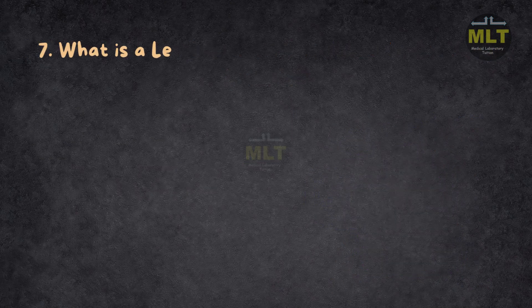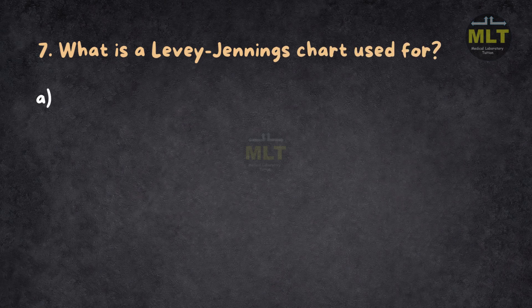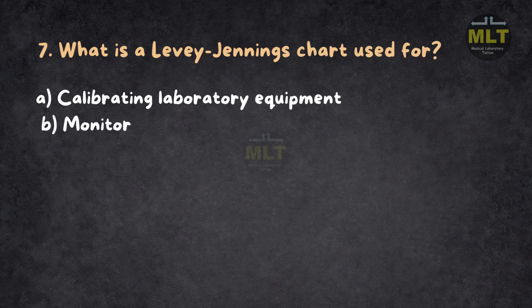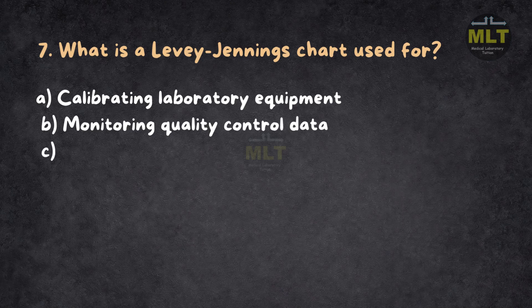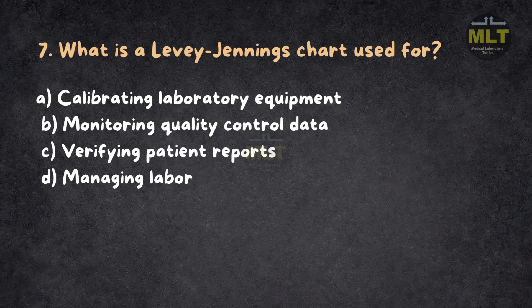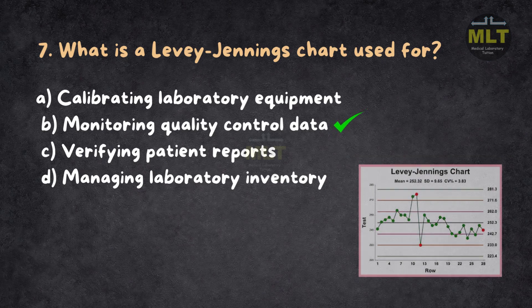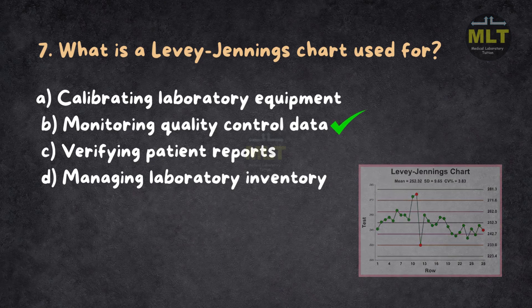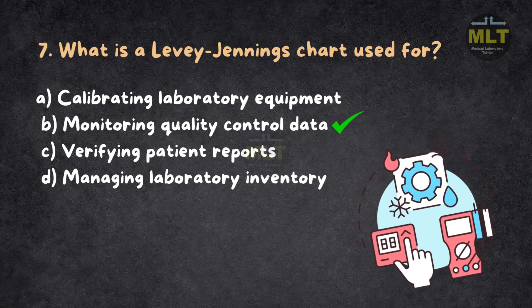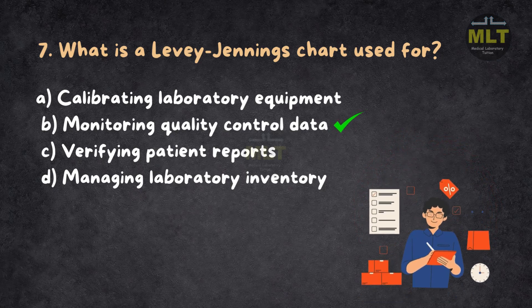Question 7: What is a Levy-Jennings chart used for? a. Calibrating laboratory equipment. b. Monitoring quality control data. c. Verifying patient reports. d. Managing laboratory inventory. Correct answer: b. Monitoring quality control data. Levy-Jennings charts plot QC data points against control limits to identify deviations. They visually represent trends and shifts in test performance. Calibration is separate from monitoring, and inventory management isn't relevant here. It's a key QC tool.